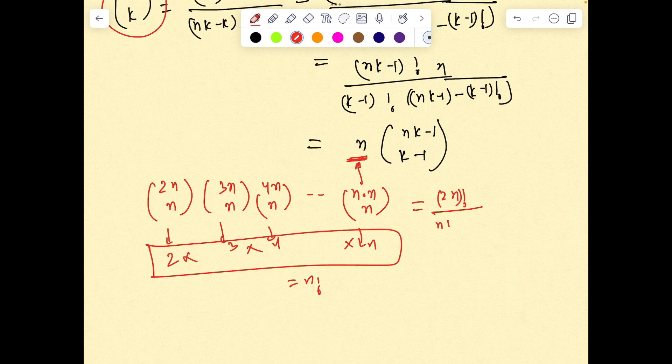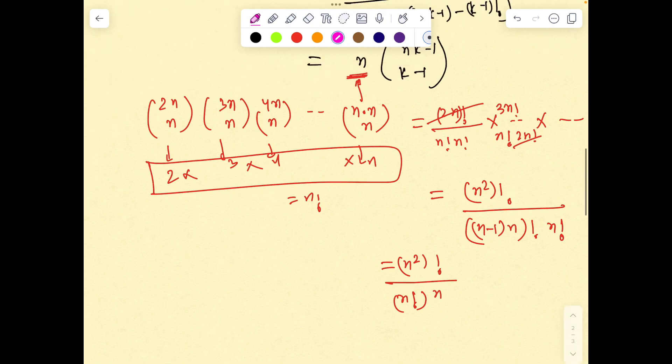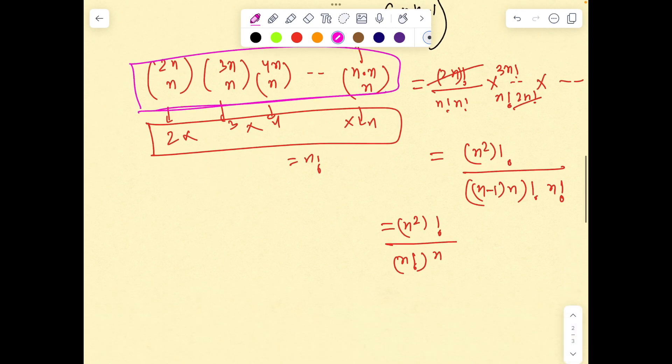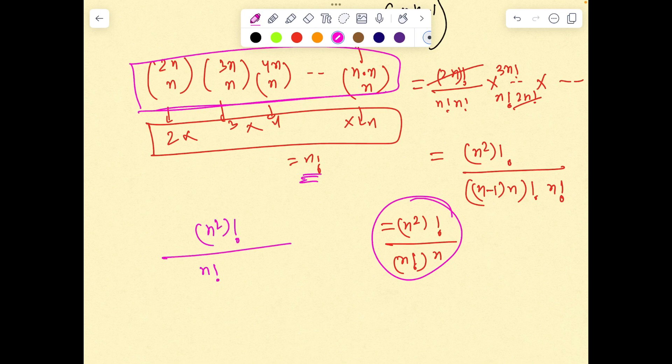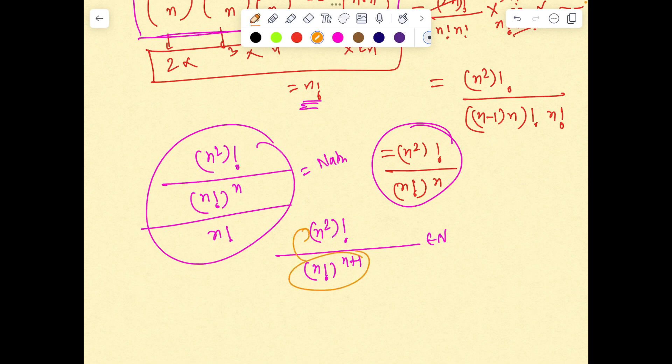What is fundamentally this product? 2n factorial by n factorial times n factorial, and so on. So it boils down to n² factorial because many n factorials get kicked off. Finally we're getting n² factorial over n factorial to the power n. That's good news because from here I can see this is divisible by n factorial. Hence n² factorial over n factorial to the power (n+1) must be some natural number.